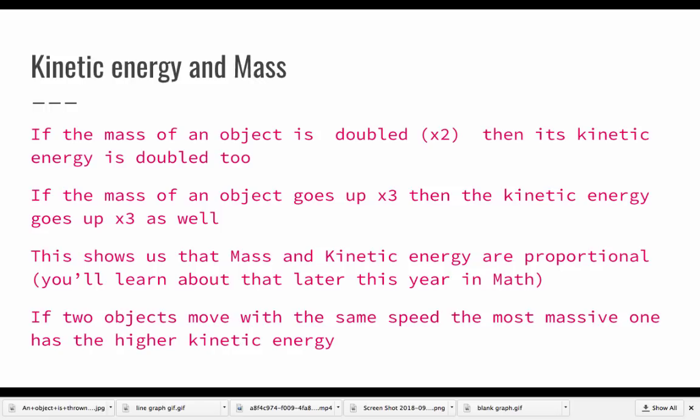So that tells us that the mass and the kinetic energy are proportional, and we won't get into that detail. You're going to get that in math later on, but when you do, your brain should perk up, and you'll remember kinetic energy and mass. If two objects move with the same speed, the most massive one is going to have a higher kinetic energy.